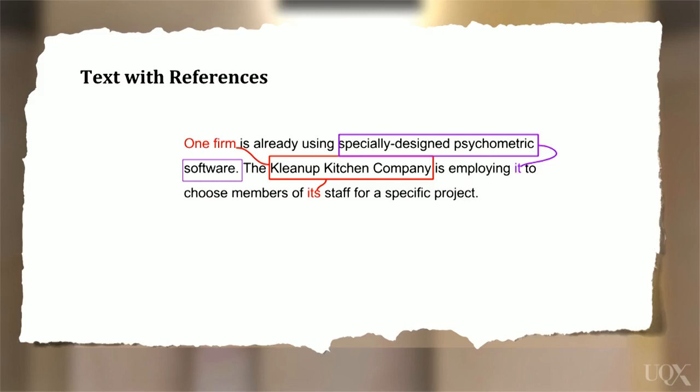'It' refers to specially designed psychometric software. The reference word 'it' comes after the type of software that is described. And finally, 'it's' refers to the Clean-Up Kitchen company staff. So this reference word also refers back to this particular company.